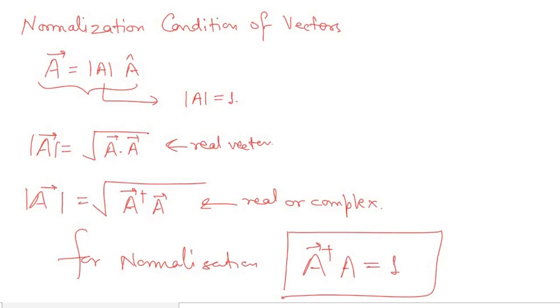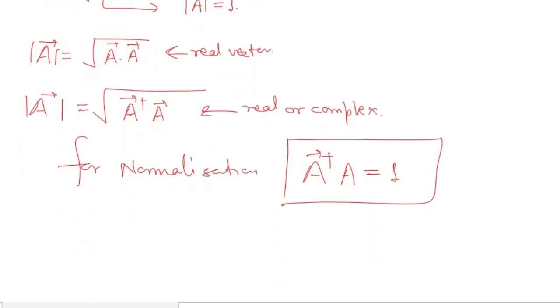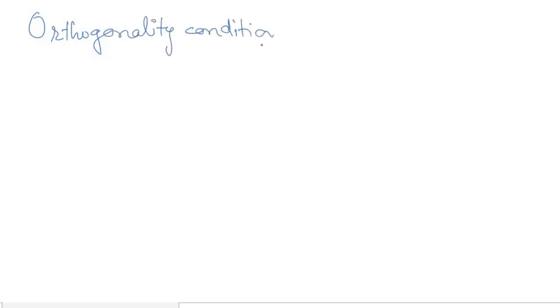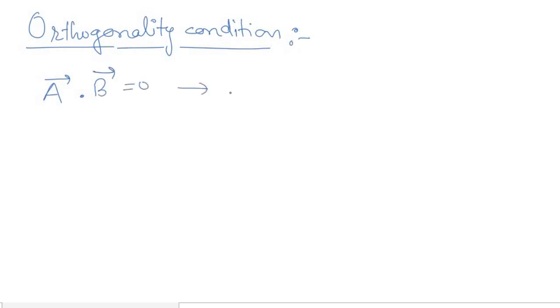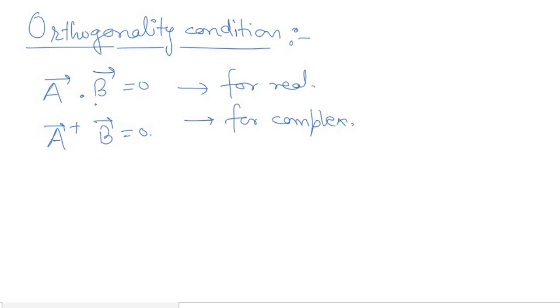There is one more definition: the orthogonality condition. Orthogonality means there is no component of one vector along another vector — both vectors are independent of each other. For real vectors, A·B = 0. For complex vectors, the inner product A†B = 0 is the orthogonality condition.